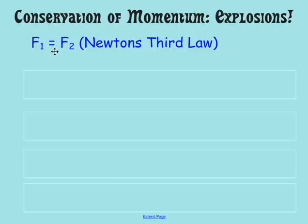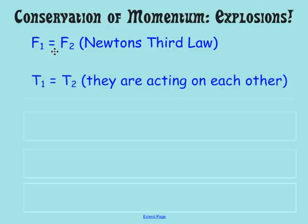So if we know that the forces are the same, and if we know that the times are going to be the same because they are acting on each other, the force of a gun on a bullet is going to be the same amount of time as the force of the bullet acting back on the gun. So they're acting on each other, so we know that the F's are going to be the same and the T's are going to be the same.